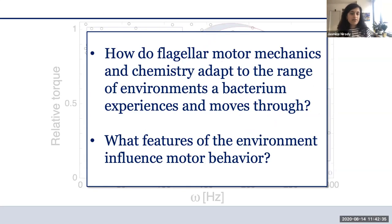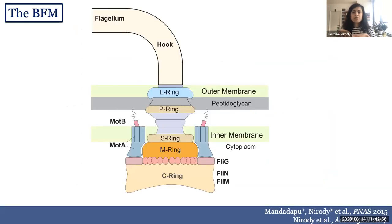These complicated lives that bacteria are living are forcing them to deal with lots of these environments and transitions between them, which means their flagellar apparatus also have to be able to adapt. These are the gist of the questions that my work on bacteria focused on: How does the flagellar motor's mechanics and chemistry adapt and allow it to function in this range of environments that the bacteria has to move through? And conversely, what are the features of the environment that are influencing the motor's behavior?